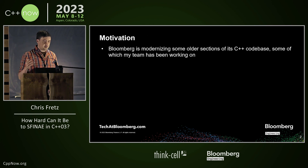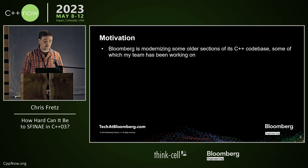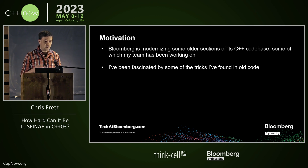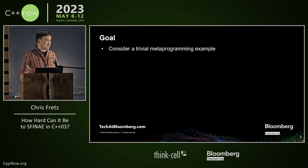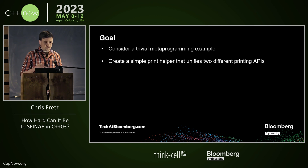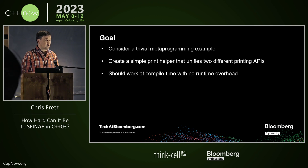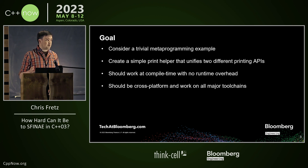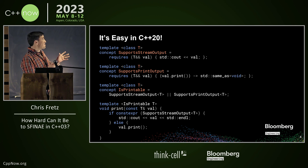So what's the motivation for this? Bloomberg has been modernizing some of the older sections of its C++ codebases, some of which my team has been working on. In the process of this, I've been fascinated by some of the tricks I've found in old code. The goal here is to consider a trivial metaprogramming example: create a simple print helper that unifies two different printing APIs. It should work at compile time with no runtime overhead, be cross-platform, and work on all major toolchains. It turns out, if we want to do this in C++20, it's super easy.